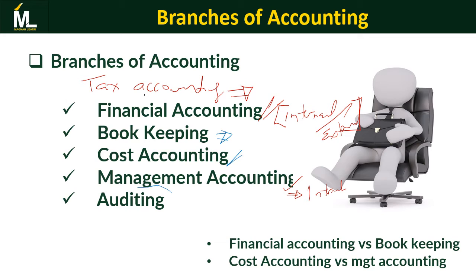Auditing looks at the verification of the transactions recorded in the financial accounting books — are they true, and do they present a true representation of the business? Generally, the aim of auditing is to make sure the company's state of affairs presents a true and fair view. It has a full course unit of its own, but for now this is just an overview.